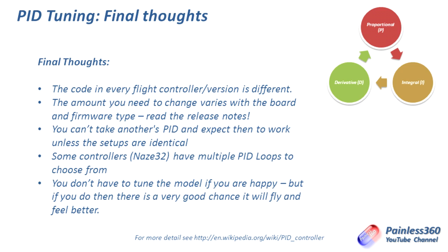The code in every flight controller and firmware version is different. Be aware that if you're using MultiWii 2.3 and upgrade to 2.4, if there are changes to the PID loops you can't just copy and paste your PID settings across and expect them to work — they probably won't. The amount of change needed to get the numbers perfect varies with board and firmware type, so read the release notes. Sometimes changing numbers by as little as 0.05 on integral or derivative is enough to make all the difference; on other boards it might be twice or ten times that.